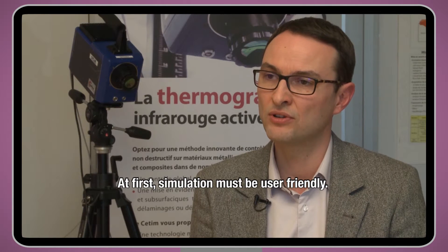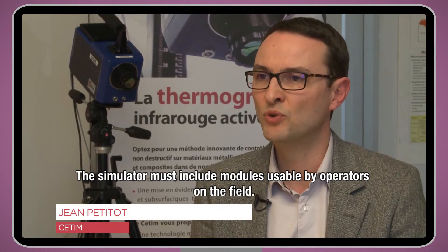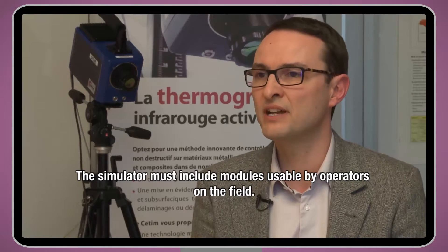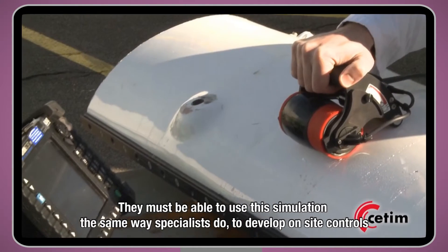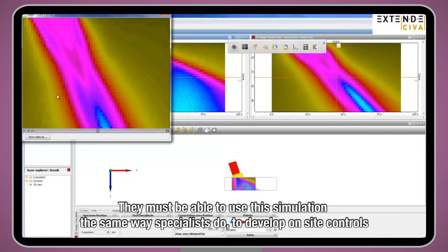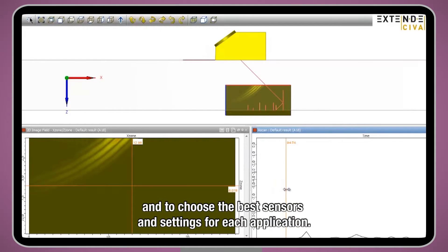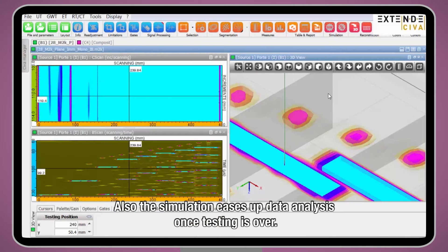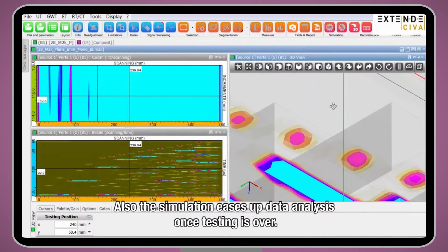It is first to make this simulation accessible, so to develop modules that are used by operators on the ground. They must be able to use this simulation the same way specialists do, to develop on-site controls. So to define what type of sensor I must use, what parameters I must put in place to ensure the best controls. The simulation also allows, once I've done my control, to interpret the results more easily.